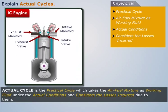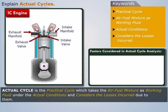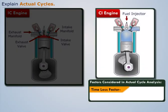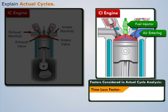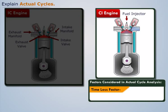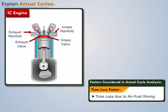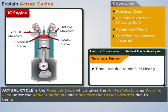The factors influencing the efficiency of the actual cycle are: Time loss factor. In the actual compression ignition engine when the fuel is injected some time is required for the mixing of the fuel. This loss is known as time loss due to air fuel mixing.